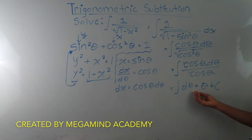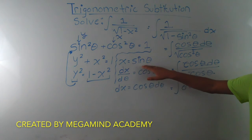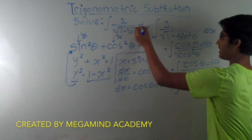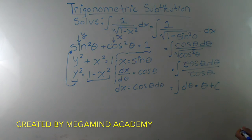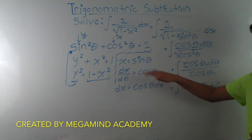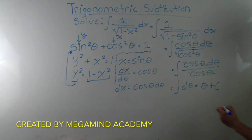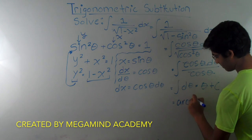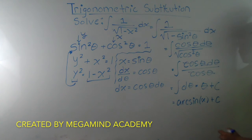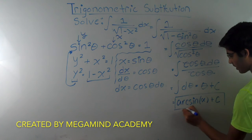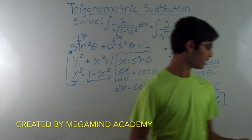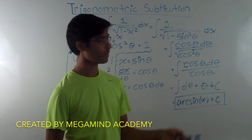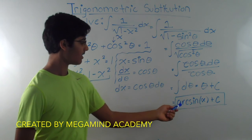Now here comes another step. Remember how in the beginning we substituted sine of theta in for x — and by the way, up here it's supposed to be dx. The question is asking for the integral in terms of x, so we have to find out what theta is in terms of x. In this example, it's relatively simple: we know that x is equal to sine of theta, so theta is equal to arcsin of x. So this is equal to arcsin of x plus c. The answer to this problem is arcsin of x plus c, which is correct because the derivative of arcsin(x) is 1 over the square root of 1 minus x squared — a common derivative and integral pair.